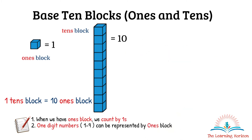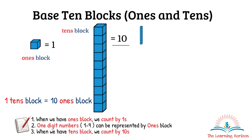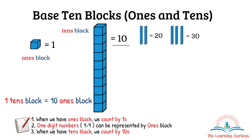When we have a tens block, we don't count all the individual blocks in the group. Instead, we know the value is 10, so we count by tens. For example, two tens blocks: 10, 20 — so two tens is equal to 20. Three tens is equal to 30, four tens is equal to 40, five tens is equal to 50, and so on.